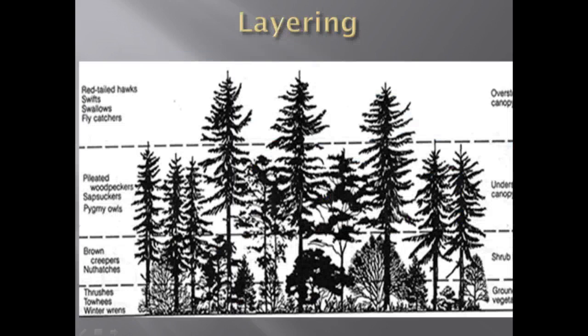When looking at wooded areas, vertical layering is an important feature of terrestrial biomes. In a forest, it might consist of an upper canopy, a lower tree layer, shrub understory, ground layer of herbaceous plants, forest floor, and the root layer. Layering of vegetation in all biomes provides diverse habitats for animals. Biomes are dynamic and usually exhibit extensive patchiness.